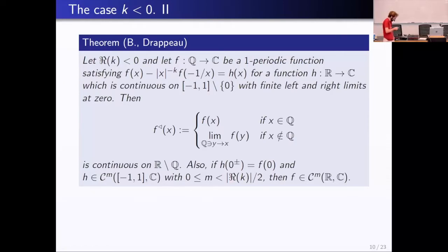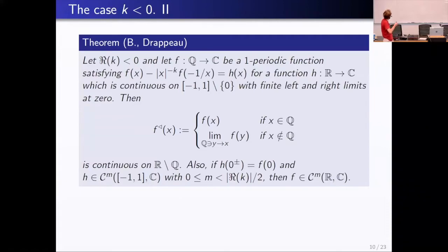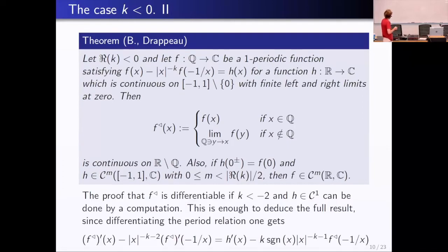The proof: it is a computation to prove differentiability; it's a longer computation. Then one uses an inductive argument: differentiating the function once, the derivative becomes a quantum modular form of weight −k+2, and one can connect it. So that is the k negative case.